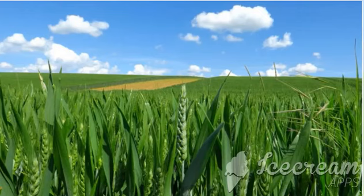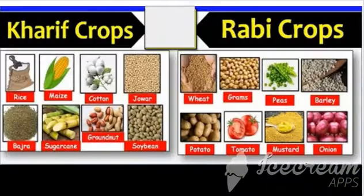Based on the growing pattern, the crops grown in India can be classified as Kharif crops and Rabi crops. Kharif crops are sown in June and harvested in October. Rice, maize, cotton and groundnut are some of the examples of Kharif crops.